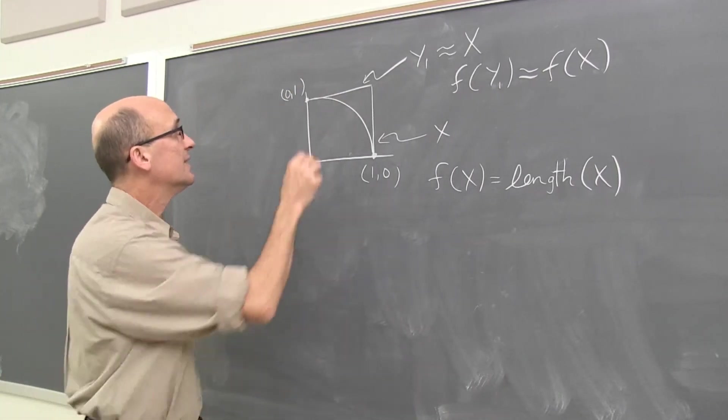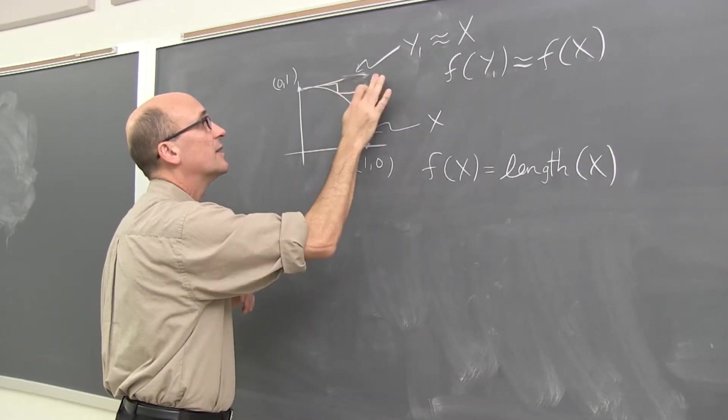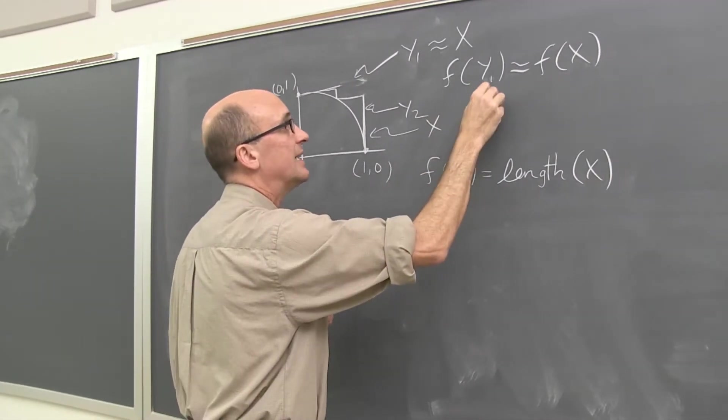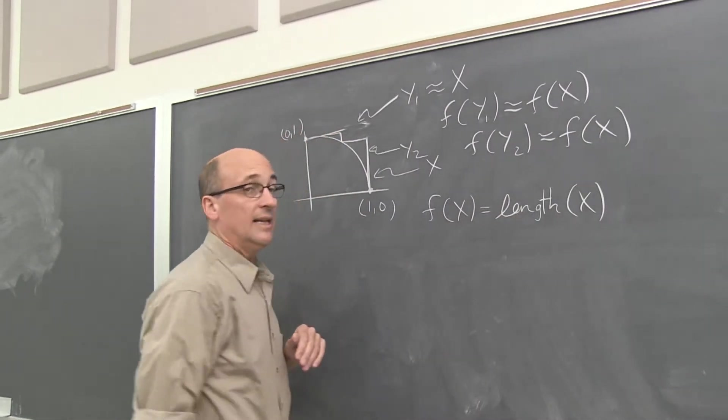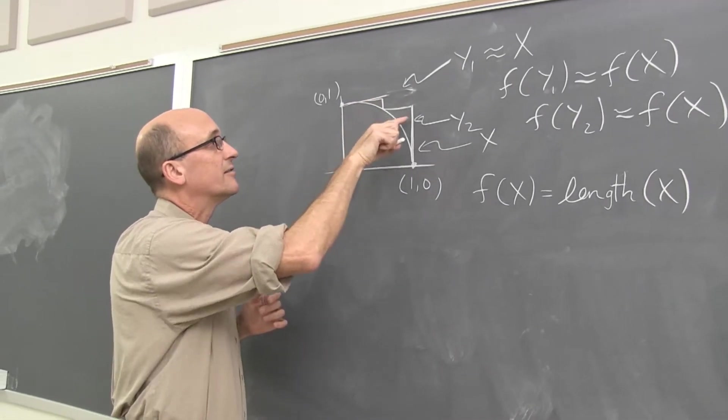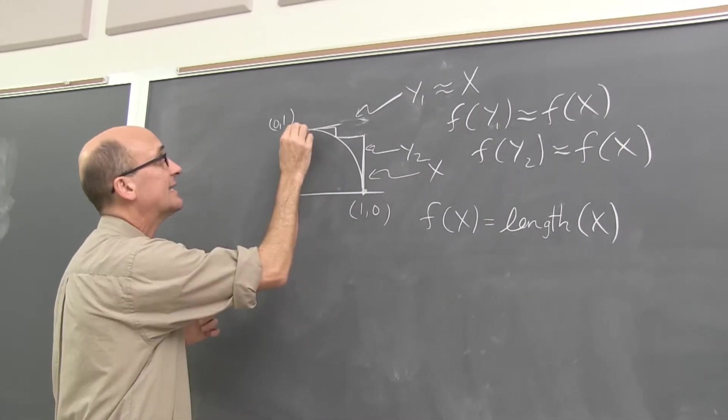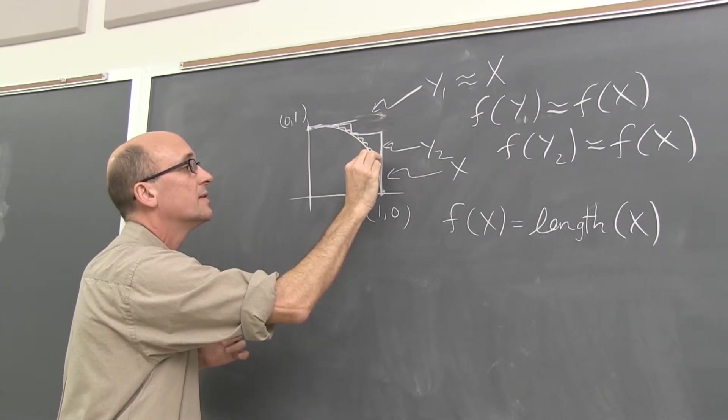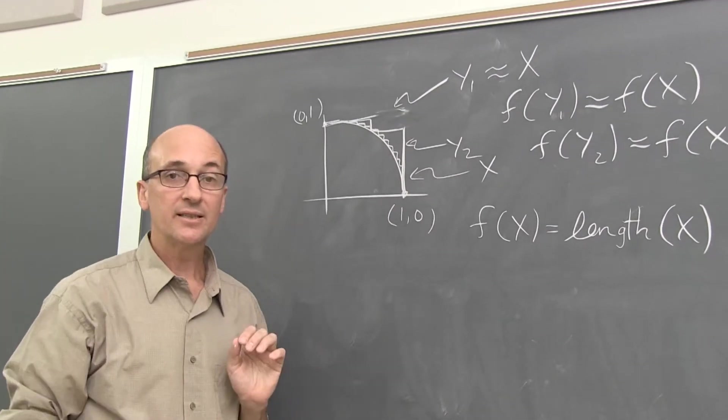And I can see right away how I can improve. Instead of using two line segments, I will go with over and down and over and down. There's my Y2. Now that's clearly a better fit. And maybe f of Y2 is a better approximation of f of X. And there's a natural sequence of approximations now. You can see what's coming. Instead of over and down and over and down, we will do many, many, many stair steps. And as the number of stairs gets very large,